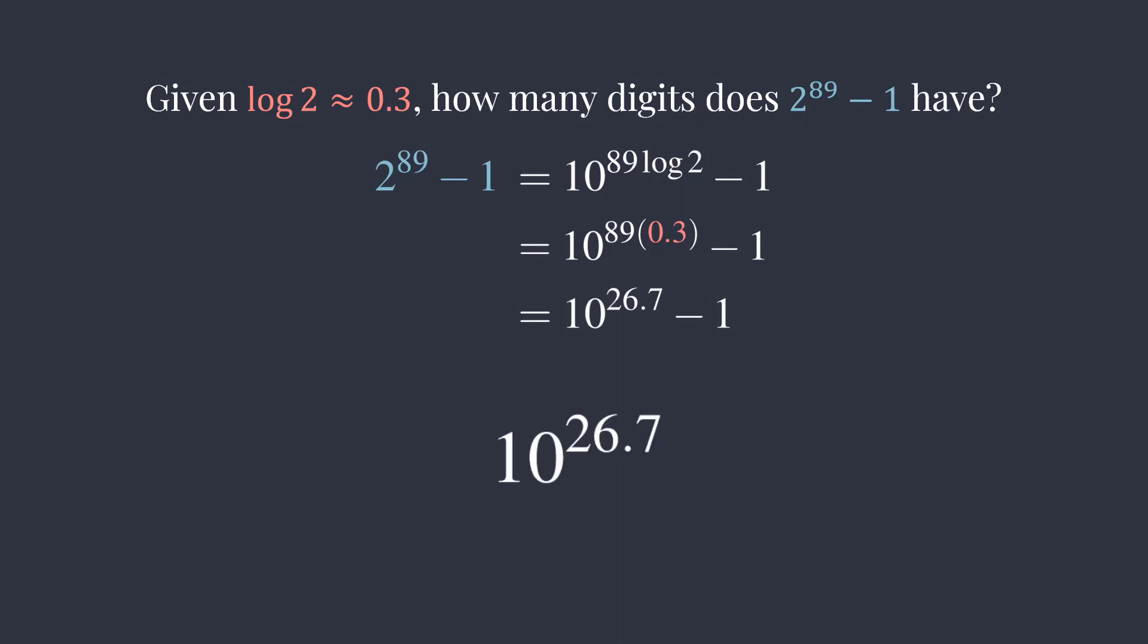We know that 10 to the 26.7 is between 10 to the 26 power and 10 to the 27 power. Since 2 to the 89 is an integer,